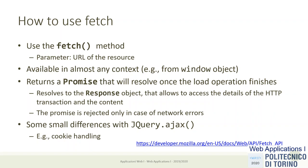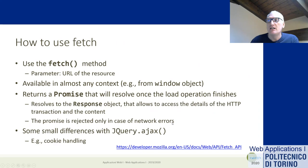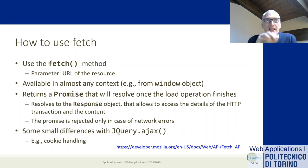The fetch method returns immediately without waiting for the HTTP GET to complete, and it returns a Promise object. That promise will only resolve later. We record in the 'then' part what we want to do later, and when the promise resolves it yields a Response object with all the information about the HTTP response. The promise is rejected only in the case of network errors.